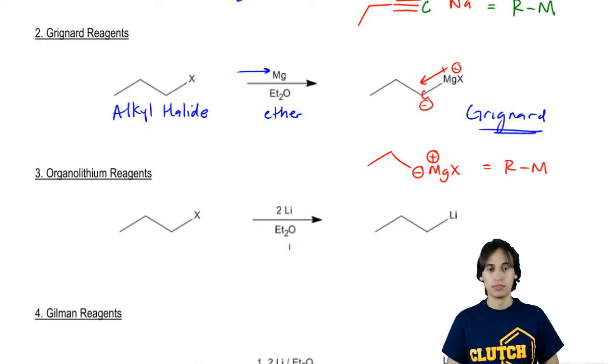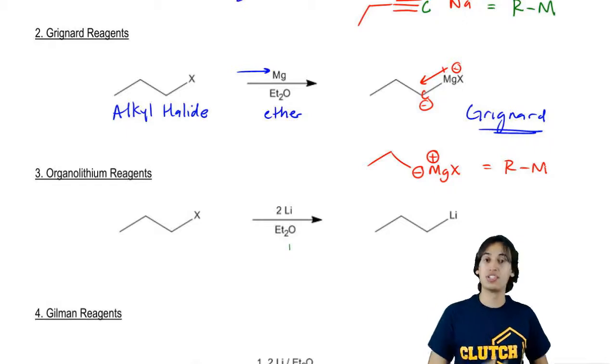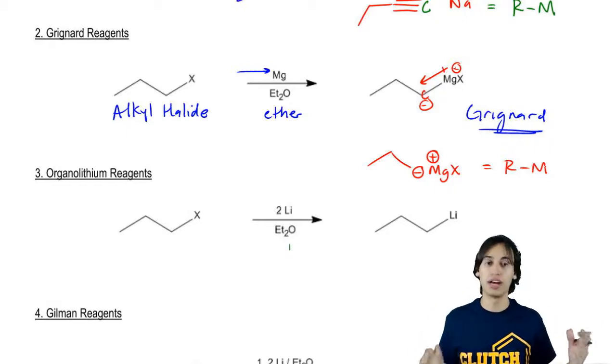Now why is a Grignard reagent considered an organometallic? Well, because once again we have the same situation where we have a carbon that has a group one or two metal attached to it. If I were to draw that dipole, it would really give almost all of its electrons to that carbon. So I'd get a partial negative here and I'd get a positive there. Another way to write a Grignard is to draw it ionically. So I'd have a negative charge here and then I would put MgBr – or I said Br because usually we use Br, but it could be any X with a positive.